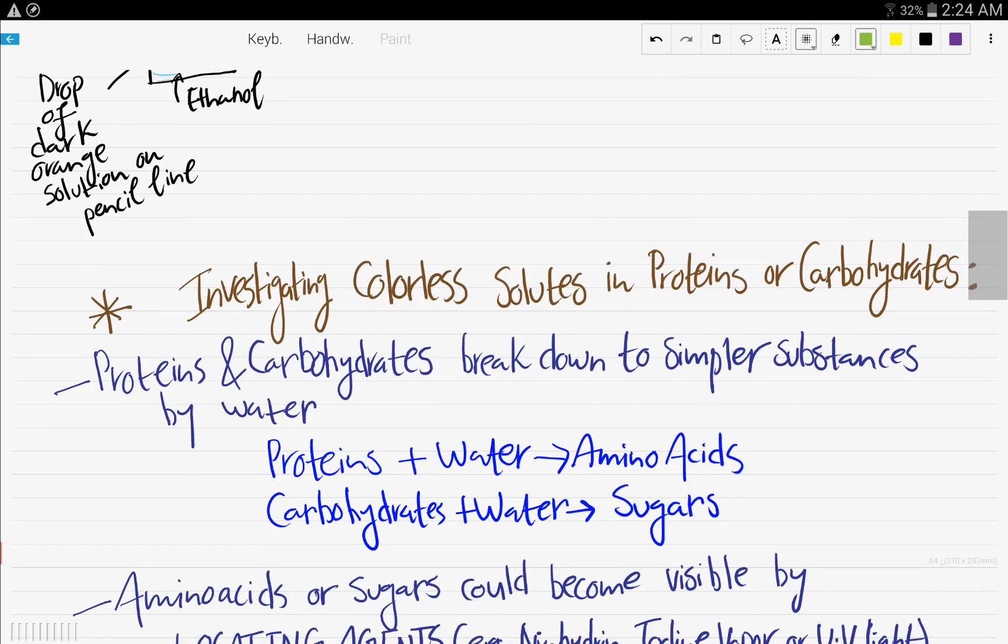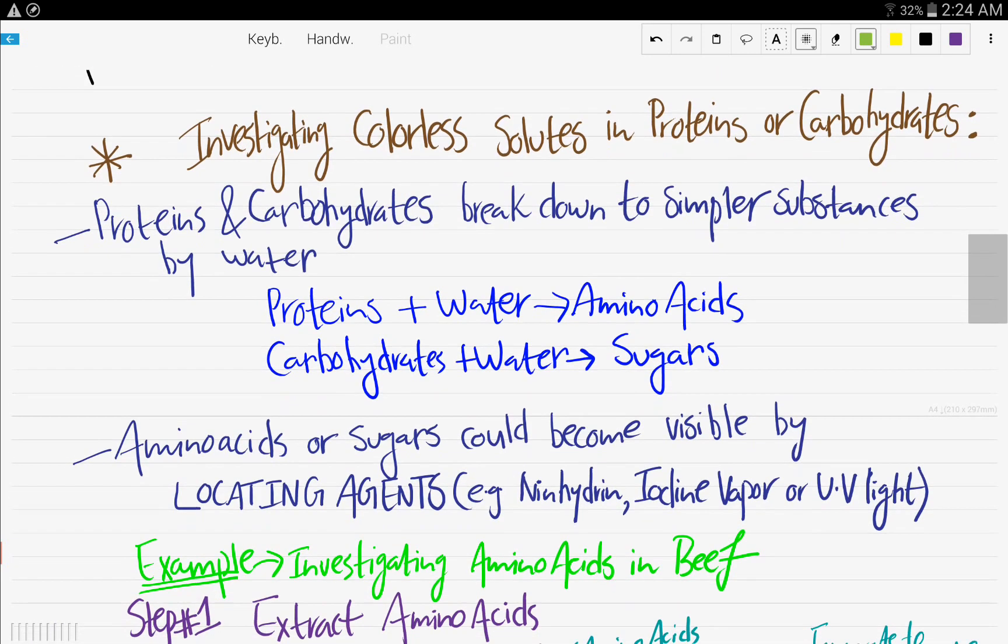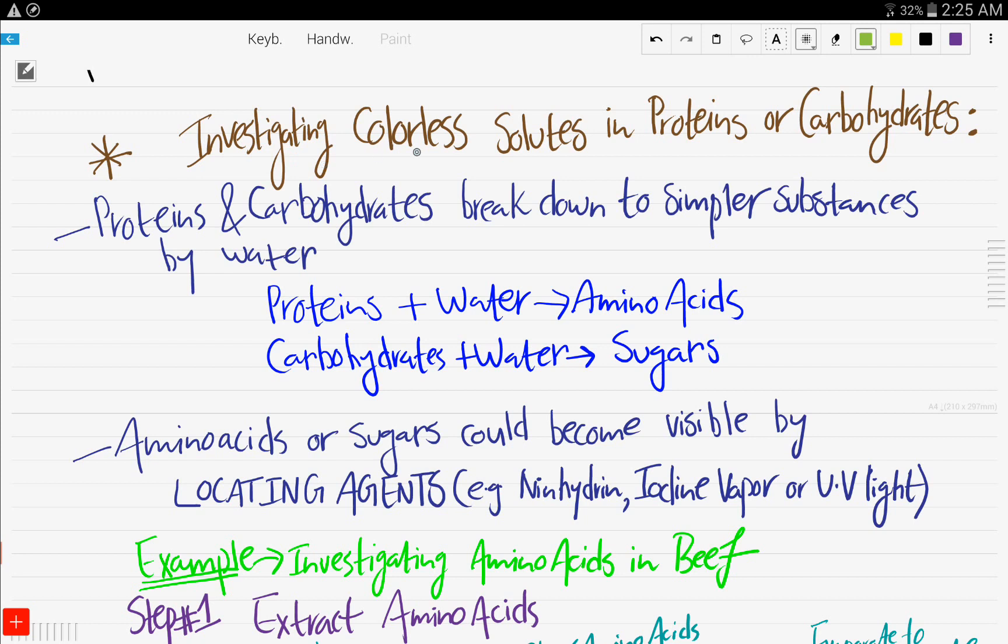Now we're gonna talk about something else and that is investigating colorless solutes in proteins or carbohydrates. So whether it was the black ink or the orange cloth, the two examples that we discussed in the previous video, these were colored solutes. So what can we do if the solutes were colorless?